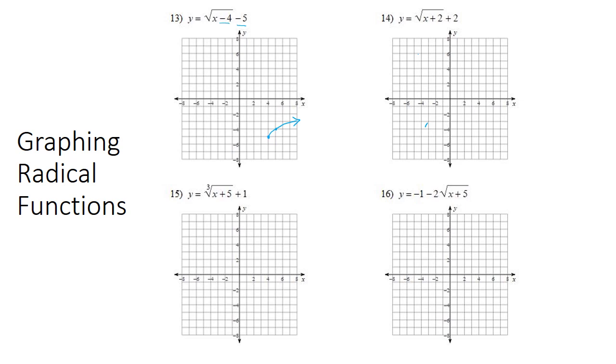Looking at number 14, we have a plus 2 for our vertical, so it's gone up 2, and a plus 2 for our horizontal, so it's gone to the left 2. So we're going to go up 2 and to the left 2. There is not a negative in the front, so it hasn't been reflected, which means it goes up.